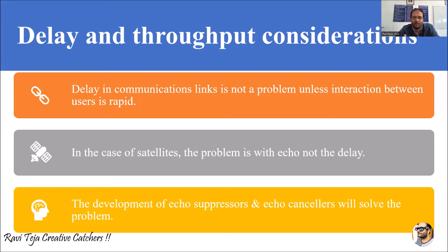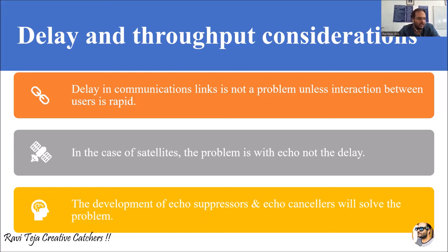Delay keeps happening; it's a common thing whether you are transmitting wired or wirelessly. But whenever you are communicating rapidly and multiple users are trying to access the same source, that is when delay happens. Delay in communication links is not a problem unless there is rapid interaction between users — whenever there is huge traffic trying to access a particular source.